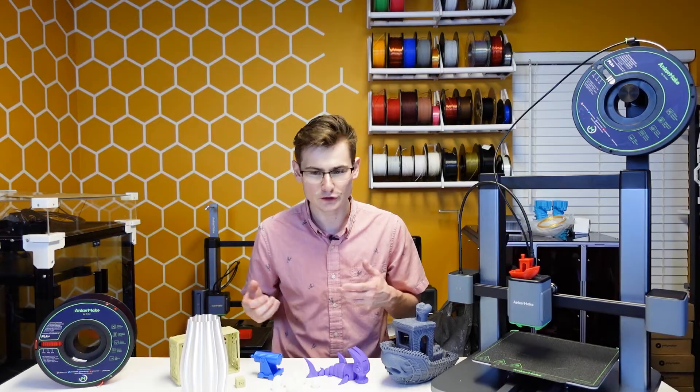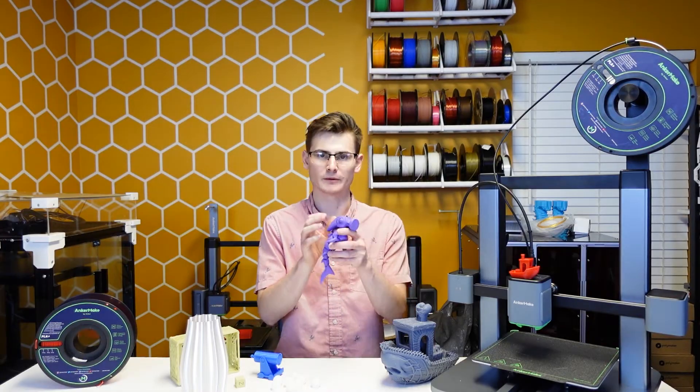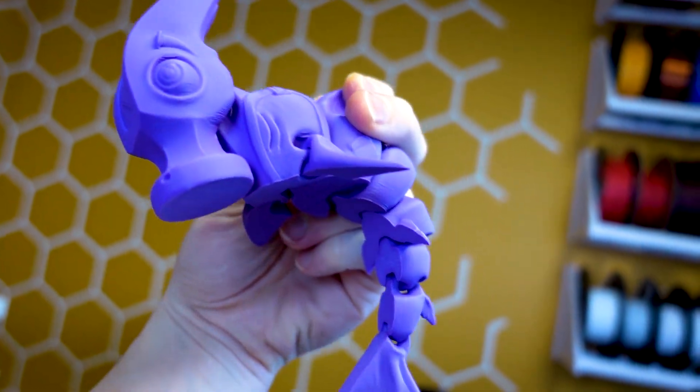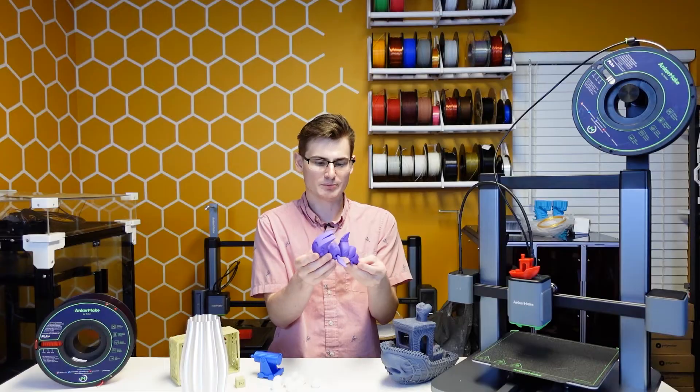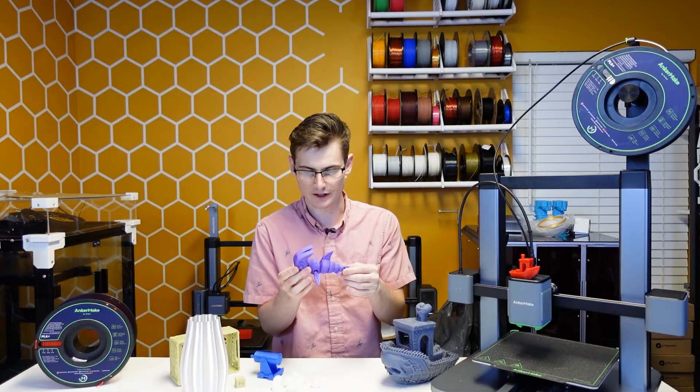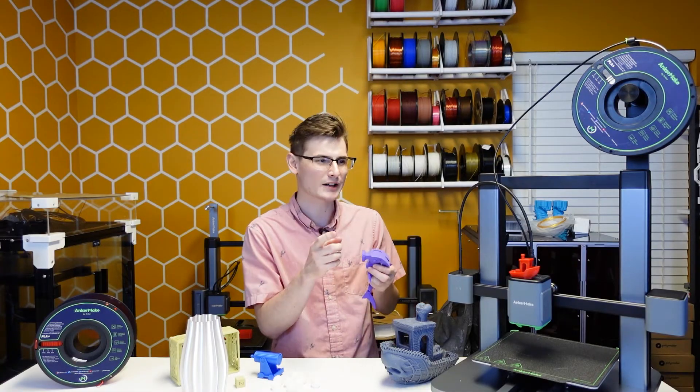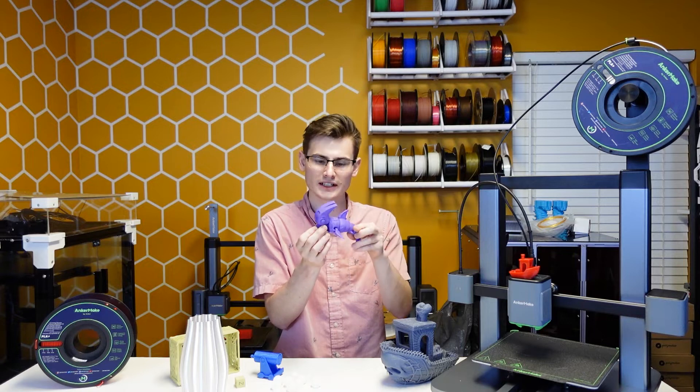In every one of my review videos, I always print something from Dan over at FlexiFactory, and in the M5C video, I've printed this brand new Hammerhead Shark. It printed at the 500mm fast mode. Did it actually hit 500mm per second? I doubt it, but it printed in only an hour and a half.